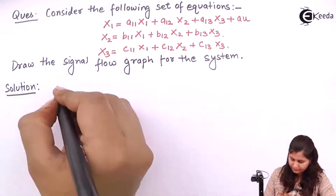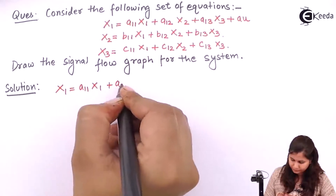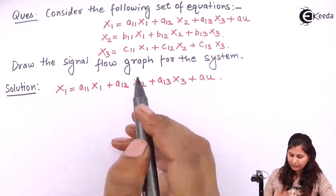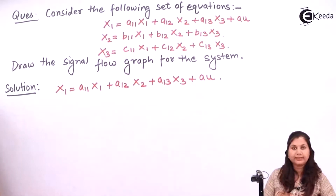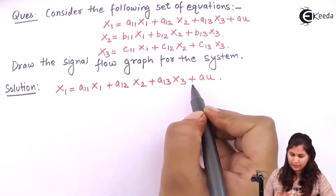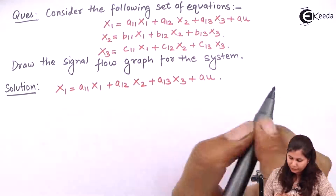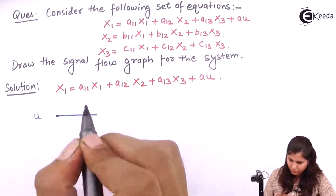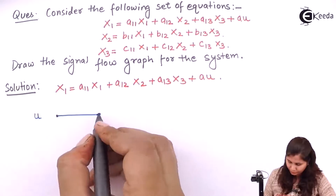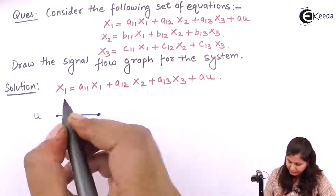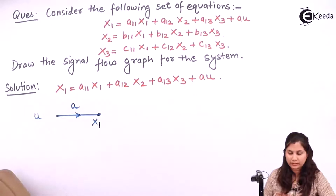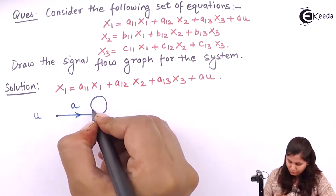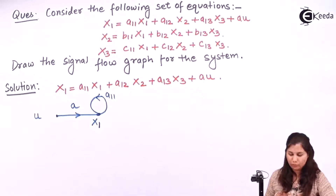For the first equation, which is x1, we have constants a11, a12, a13, and a, with variables x1, x2, x3, and u, where u is the input. So u is given to node x1, and u is multiplied with transmittance a. x1 is multiplied with a11 — that is a self-feedback loop with transmittance a11.